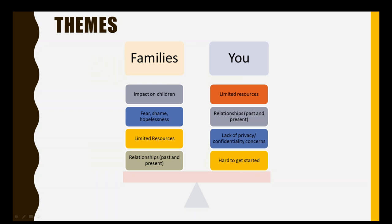One critical thing to note when you start having this conversation around domestic violence: once you open that door, child safety is always linked to the non-abusive parent's safety. Even if you think a parent is minimizing or not talking about things they should be, research backs up our common-sense understanding that the best way to protect the child is to make sure the non-abusive parent feels safe, listened to, and protected as well.